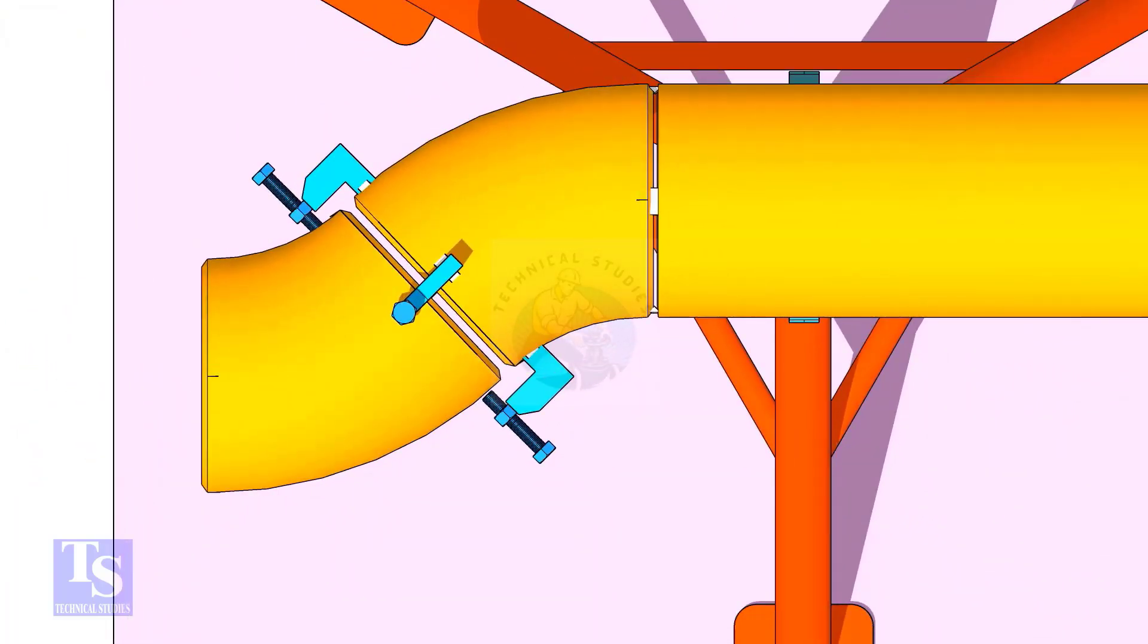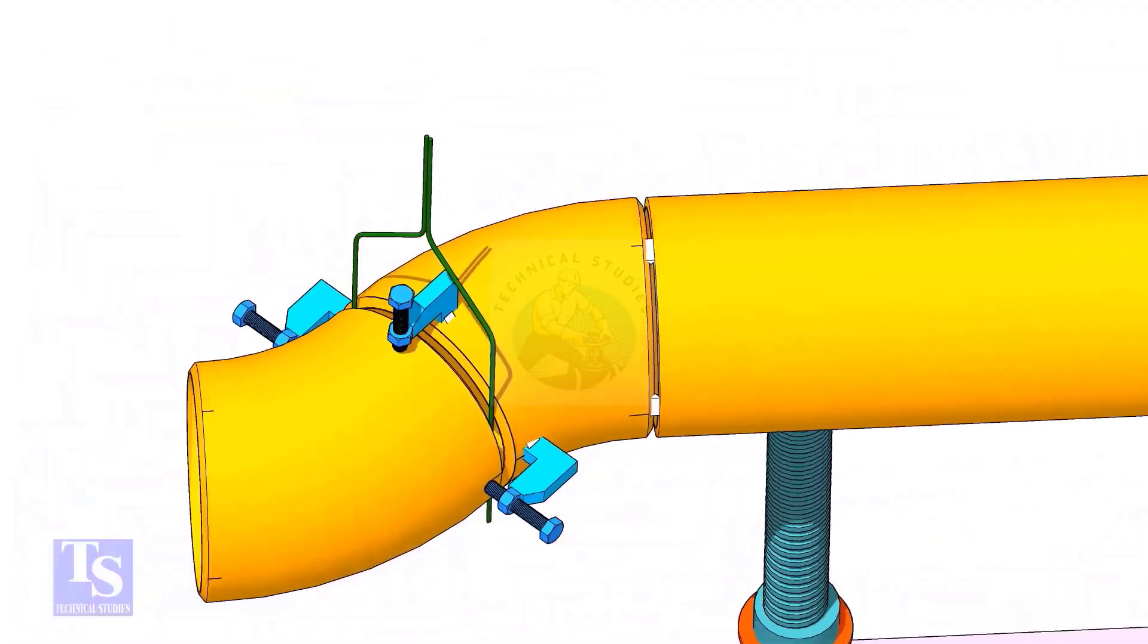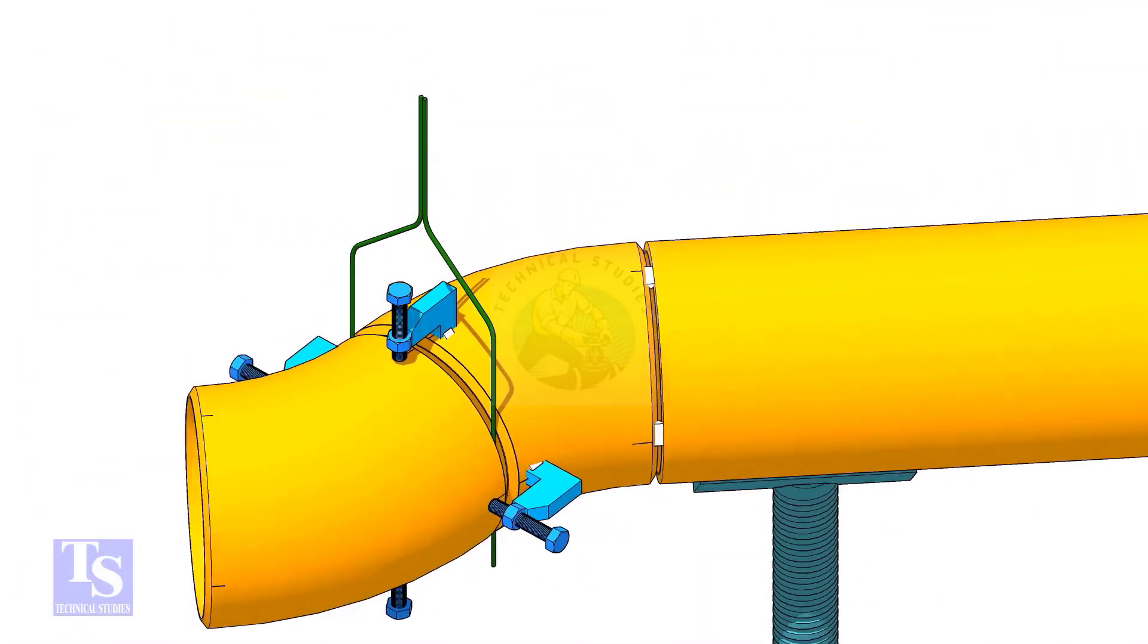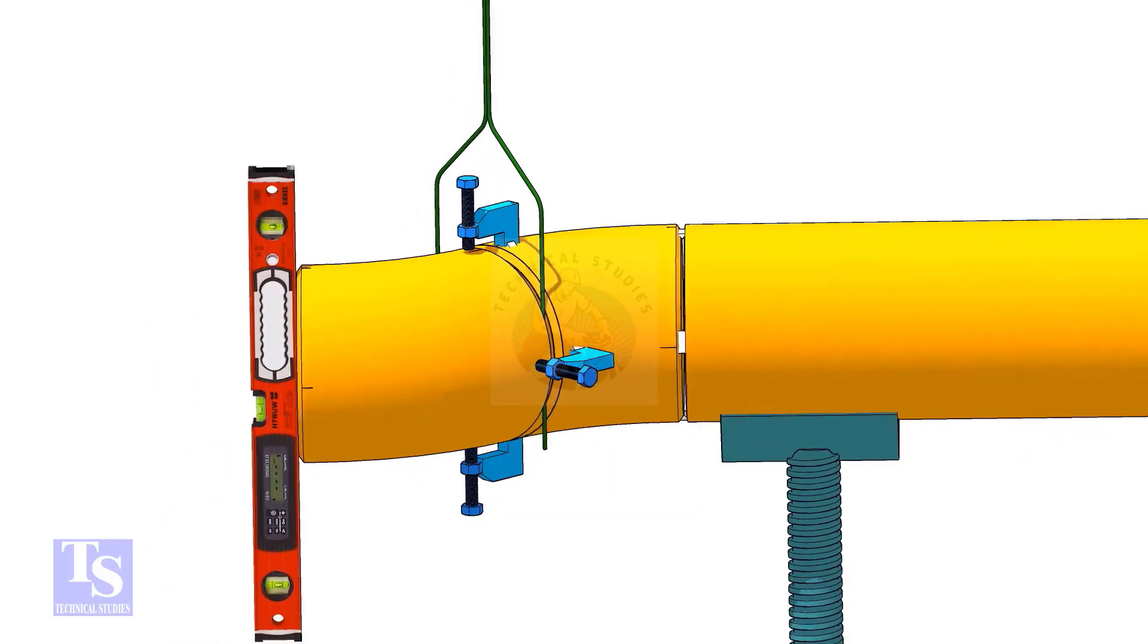Put the gap rod between the elbows and maintain the required gap. Check if the face is level.